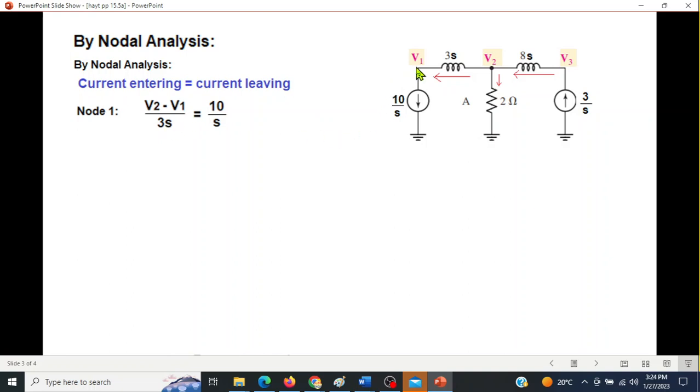This is current leaving. So 10 over S is current leaving. From here we can cancel S and then cross multiply. So V2 minus V1 will be 30, and from here V1 will be V2 minus 30. This is our equation number 1.